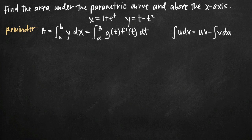Today we're going to be talking about how to find area under the parametric curve but above the x-axis. In this particular problem we've been given the parametric curve defined by the two equations x equals 1 plus e to the t and y equals t minus t squared, and we've been asked to find the area bounded by this parametric curve and the x-axis.